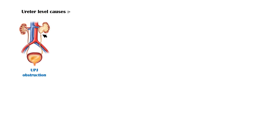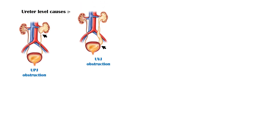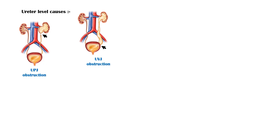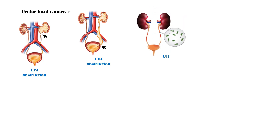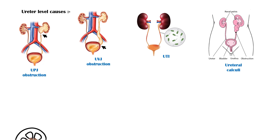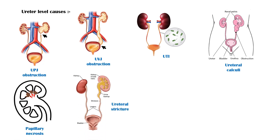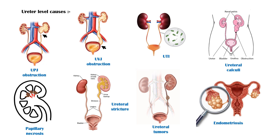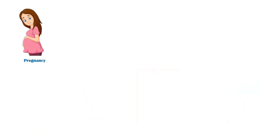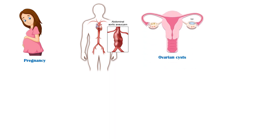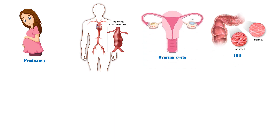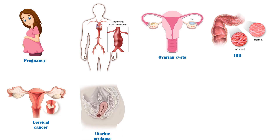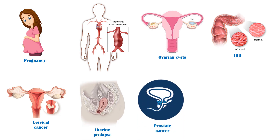Some ureter-level causes include the following: ureteropelvic junction obstruction, ureterovesical junction obstruction, urinary tract infections, ureteral calculi, papillary necrosis, ureteral strictures, ureteral tumors, endometriosis, pregnancy, abdominal aortic aneurysms, ovarian cysts, inflammatory bowel disease, cervical cancer, uterine prolapse, prostate cancer, and diverticular disease.